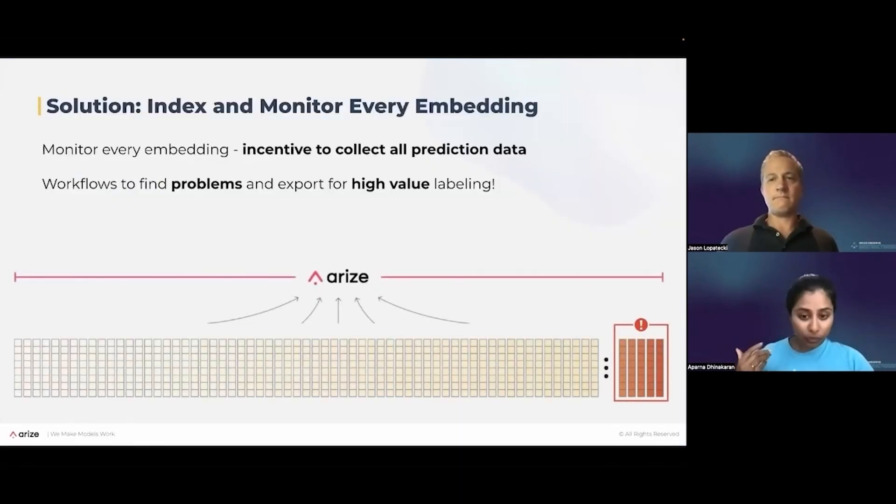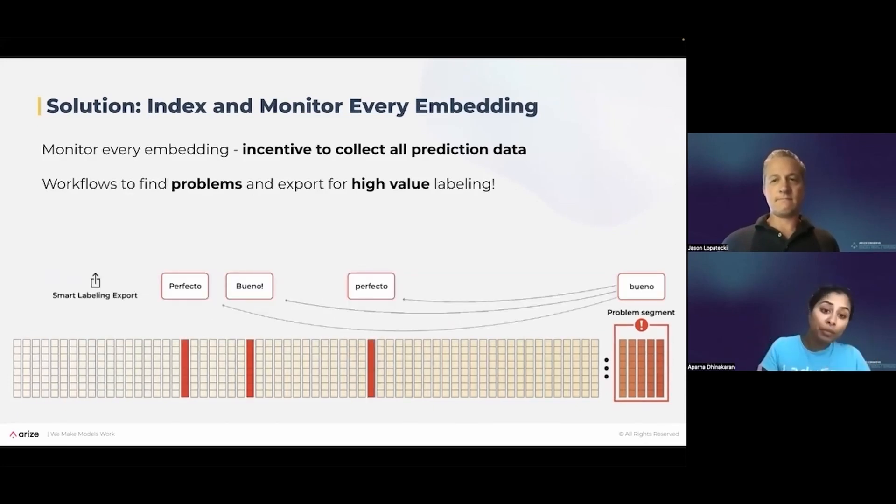And let me tell you a little bit of how this works. So what we do is collect, monitor, and index every single embedding. So this is every production inference that your model is making. We monitor the embedding, and we bubble up when there's problematic segments. So in the example that Jason was sharing, where there is Spanish words now being tossed into the data, it would actually identify those problematic segments. And then also find similar examples to those problematic segments. So because we're collecting all of the production data, we can actually bubble up where the problems are, where the model is not doing so well, what are outliers, when there's changes.